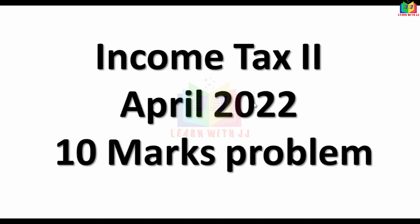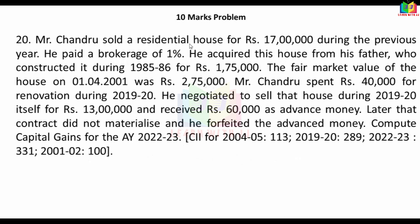Income Tax 2, April 2022 question paper. Mr. Chandru sold a residential house for Rs.17,00,000 during the previous year. He paid brokerage of 1%. He acquired this house from his father, who constructed it during 1985-86 for Rs.1,75,000. The fair market value of the house on 1-4-2001 was Rs.2,75,000. Mr. Chandru spent Rs.40,000 for renovation during 19-20. He negotiated to sell that house during 19-20 itself for Rs.13,00,000 and received Rs.60,000 as advance money. Later that contract did not materialize and he forfeited the advance money. Compute capital gain for the assessment year 23-24.